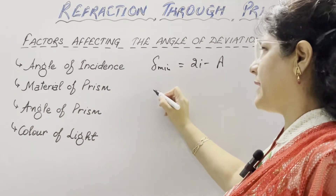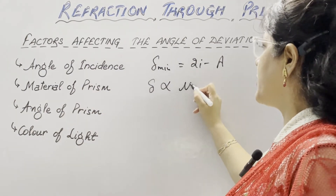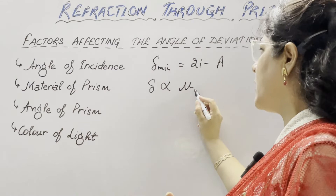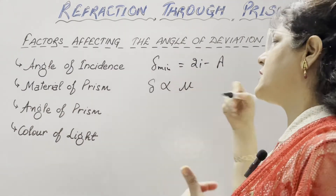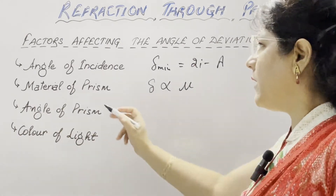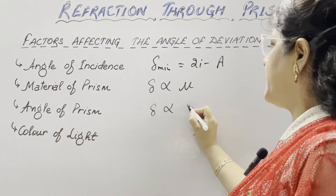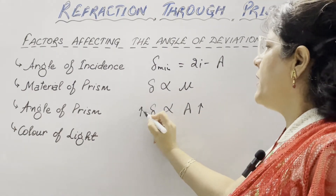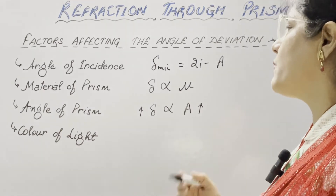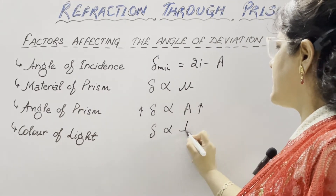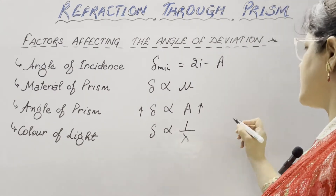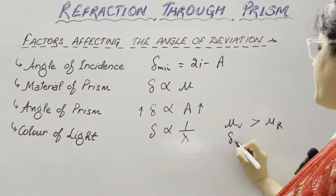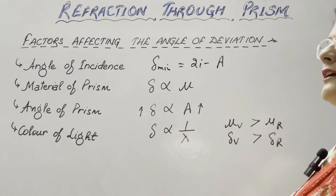The second factor is the material of the prism — that is, the refractive index. Delta is directly proportional to refractive index. For example, the angle of deviation is more for flint glass than for crown glass, meaning the refractive index of flint glass is greater. Third, angle of prism: deviation is directly proportional to the angle of prism. Fourth, wavelength: the angle of deviation is inversely proportional to wavelength — mu for violet color is greater than mu for red, so deviation for violet is more than for red.